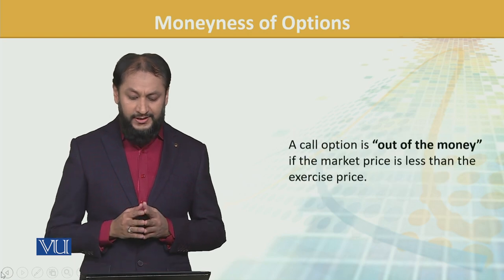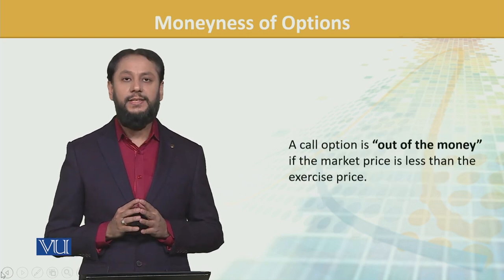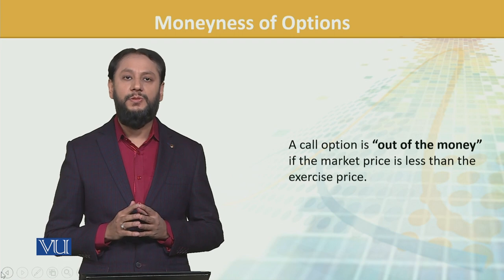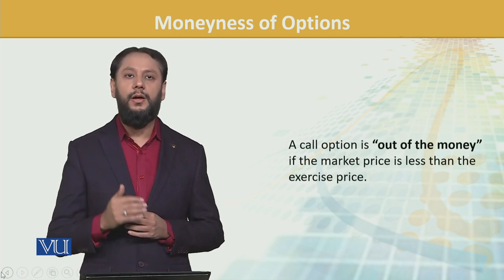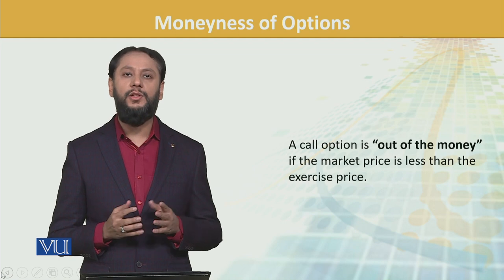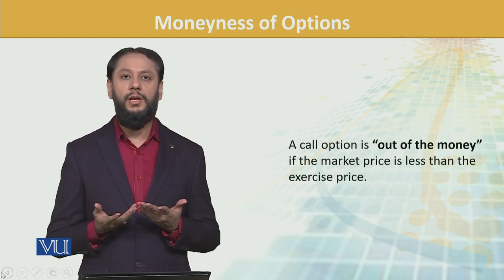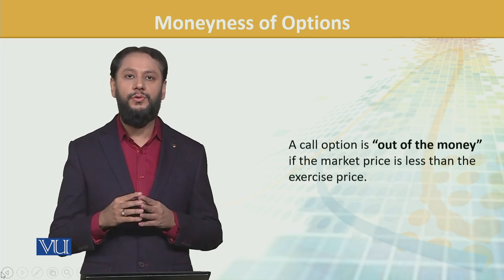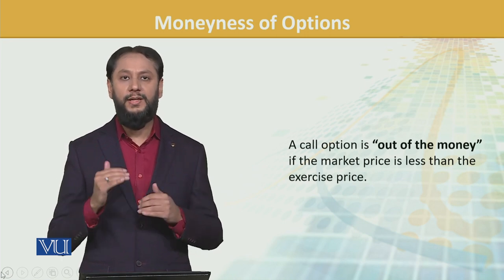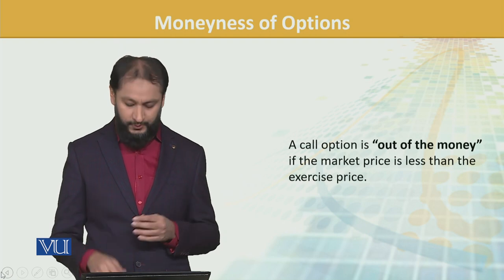A call option is out of the money if the market price is less than the exercise price. That is, you have the right to buy at, let's say, 100, but in the market it is currently at 80. So that is out of the money — taking it is not that beneficial for us. The market price is well below our strike price. That is out of money.